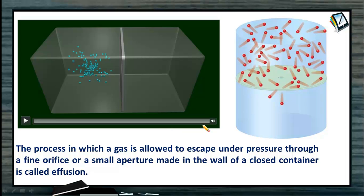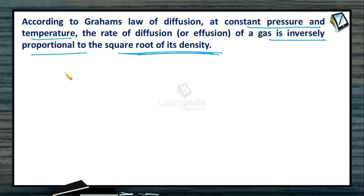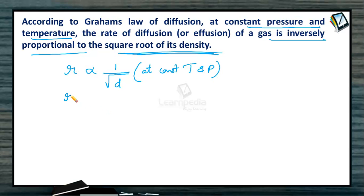Now, let us understand the statement of Graham's law of diffusion. At constant pressure and temperature, the rate of diffusion or effusion of a gas is inversely proportional to the square root of its density. So, if R1 and R2 are the rates of diffusion of two different gases, then R1/R2 = √(D2/D1), where D1 and D2 are the densities of the two gases respectively.